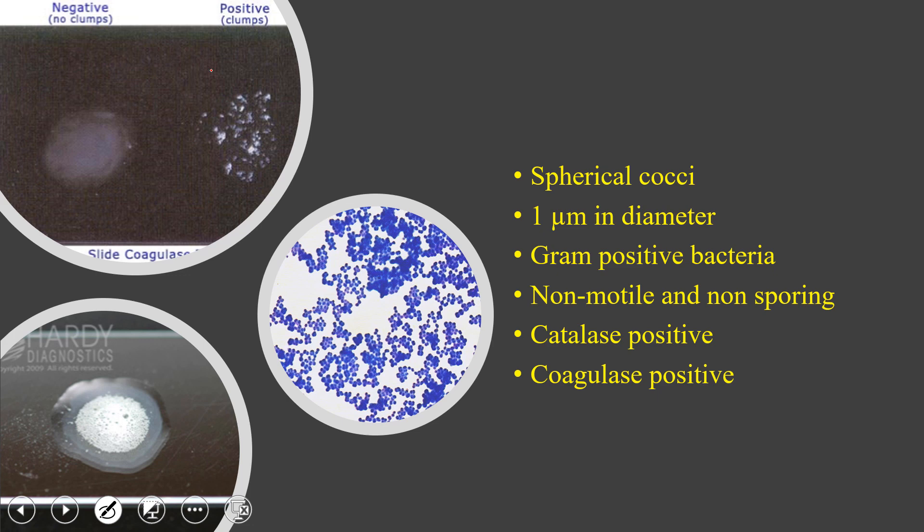Staphylococcus aureus is spherical in shape, approximately one micrometer in diameter, gram-positive, non-motile, and non-sporing — meaning it has no flagella and does not produce spores. One of the distinguishing characteristics is that it is catalase-positive and coagulase-positive. All Staphylococcus are catalase-positive, Streptococcus are catalase-negative, and Micrococcus are also catalase-positive.